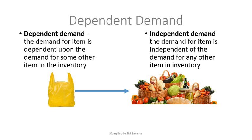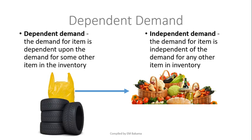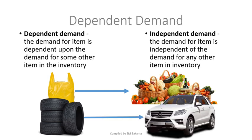Independent demand is demand that doesn't depend on the demand for another product. Another example: the demand for tires depends on the demand for cars — you wouldn't order tires if you don't have a car. Similarly, petrol demand depends on having a car, mainly for transportation. This is the key difference between dependent and independent demand.